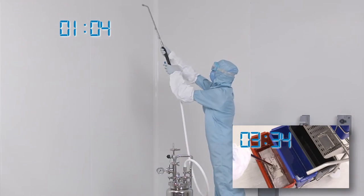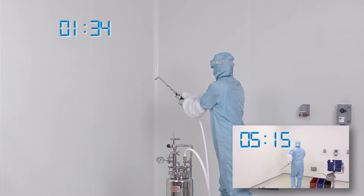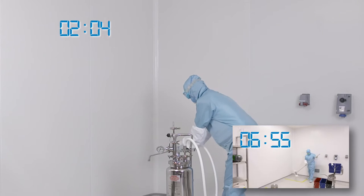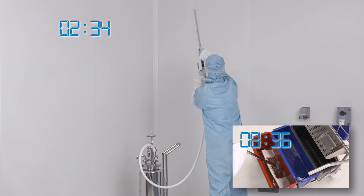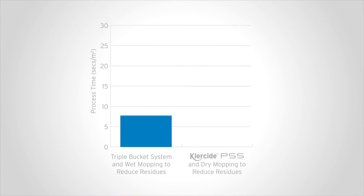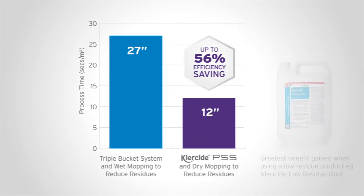Large surfaces such as walls and ceilings can be covered with a fine layer of fluid at the rate of as little as only four seconds per square meter. The time taken for application is dramatically reduced. Total clean room cleaning and disinfection process times can be cut by up to 56%.